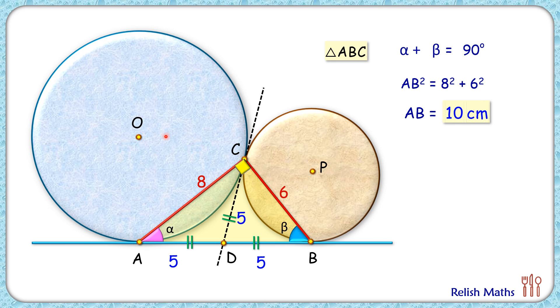Now we know that when two circles are touching each other, then their centers and the point of contact all three lie in a straight line. Also, let's join O to A and P to B.